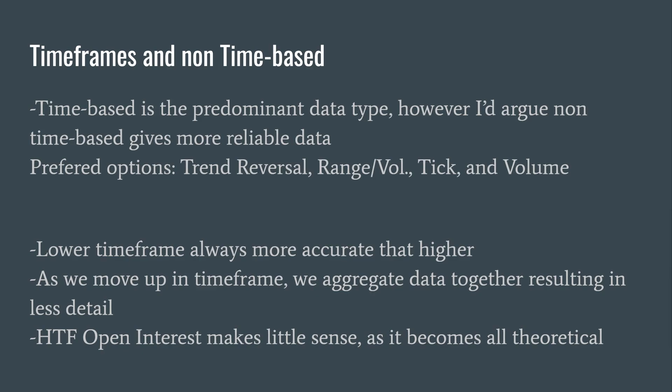With time frames, the lower the time frame the more accurate it's going to be by default, because as we move up in time frame we aggregate data together which results in less detail. This can be useful when zooming out for the bigger picture, but most of the time with open interest data you need that nitty-gritty detail. Higher time frame open interest really makes little sense to me — looking at a daily chart with OI, you've entered the realm of theoretics and you're no longer really making data-backed decisions.